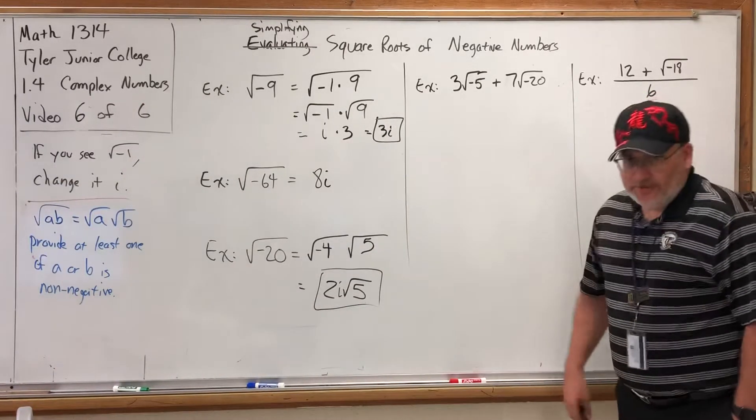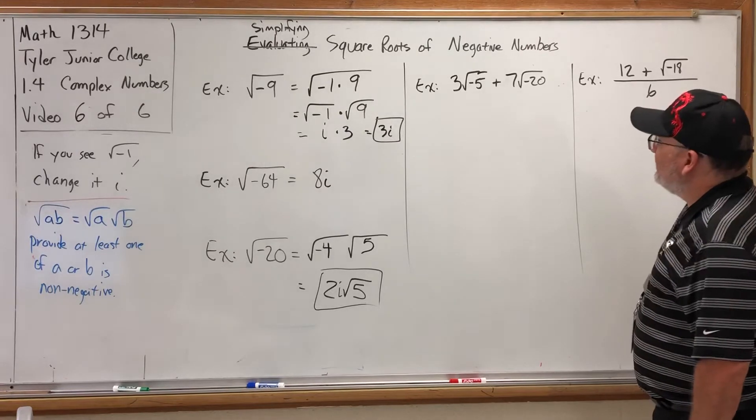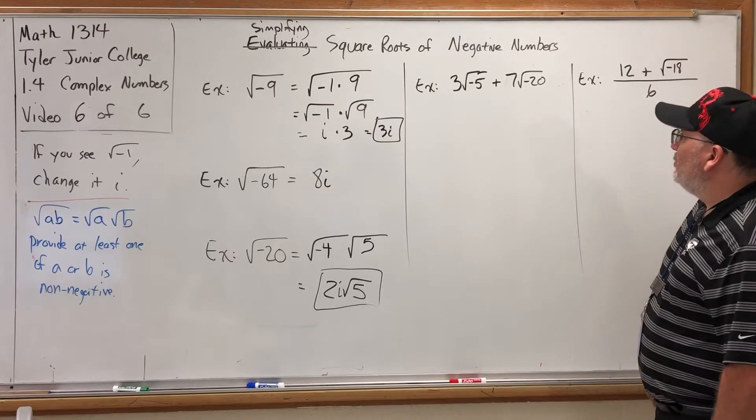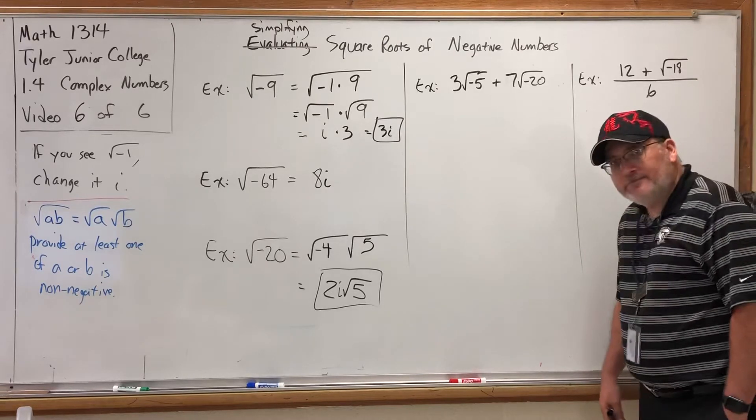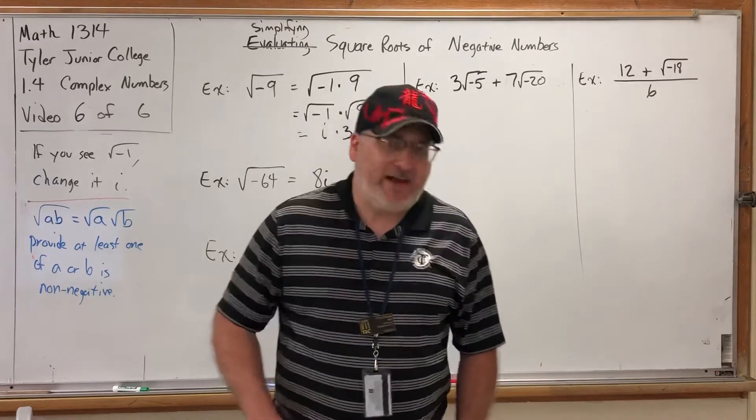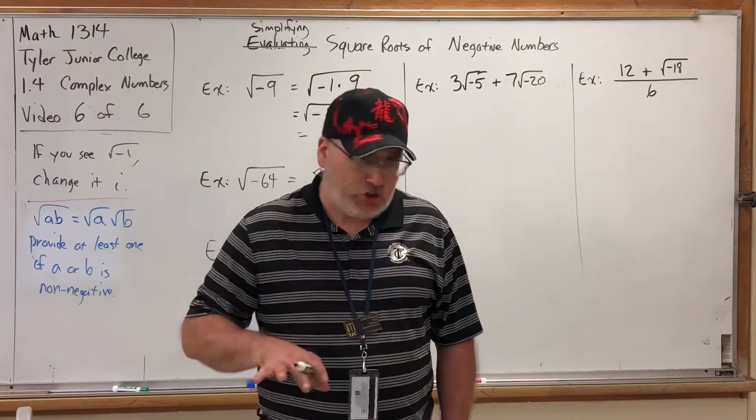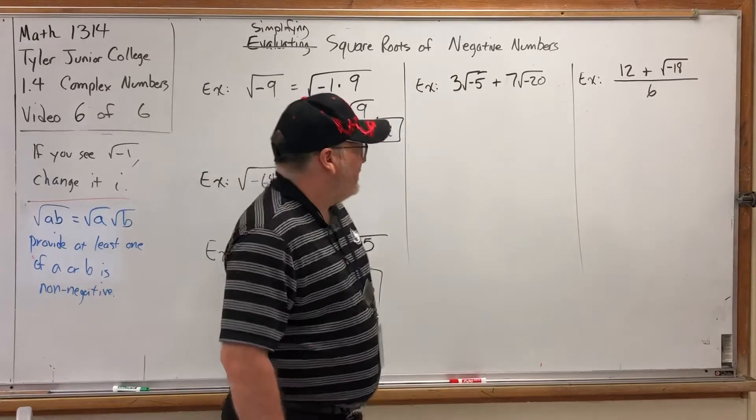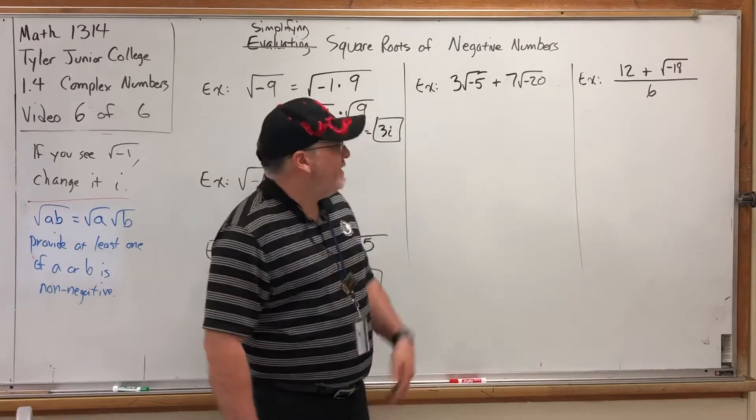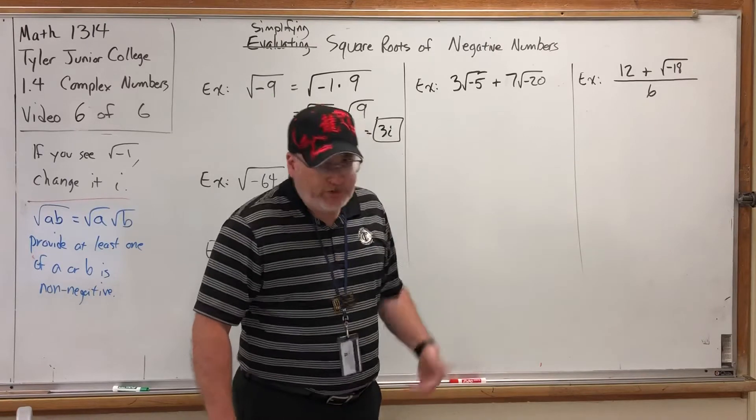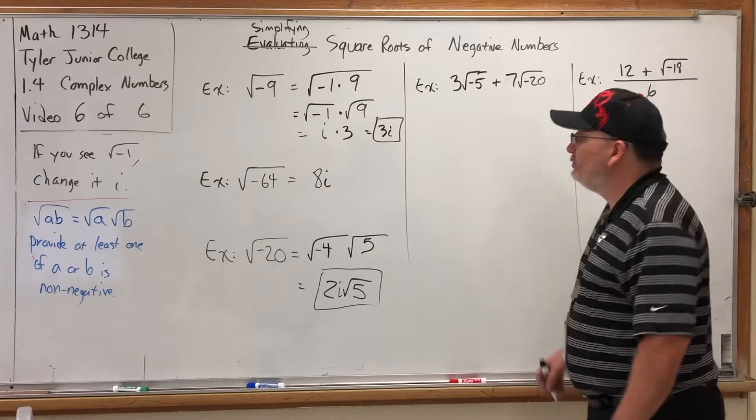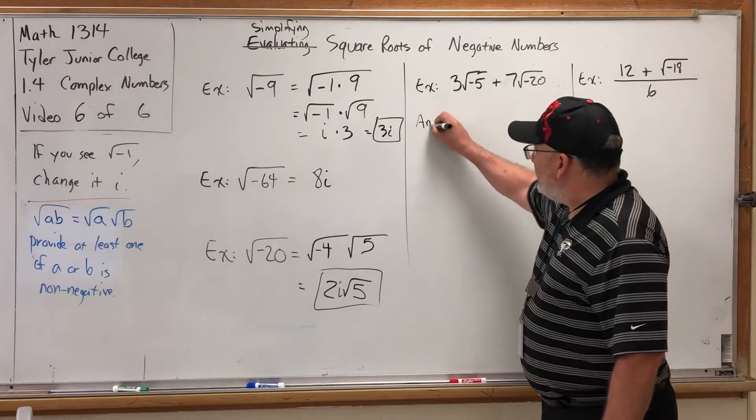Let's take a look at a couple more involved examples. The next example is asking us to add 3 times the square root of negative 5 plus 7 times the square root of negative 20. Now, there's a rule for adding square roots. It's like the rule for adding letters. You can only combine like terms. But in this case, it would go, you can only combine like radicals, meaning square roots of the same numbers, which I don't currently have. But can I get there? Watch this.